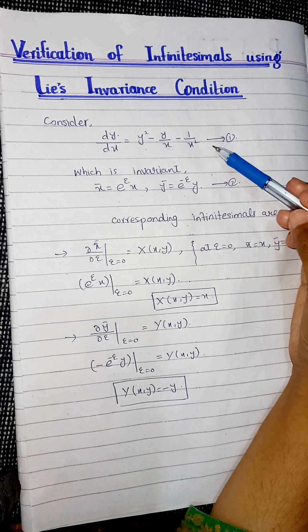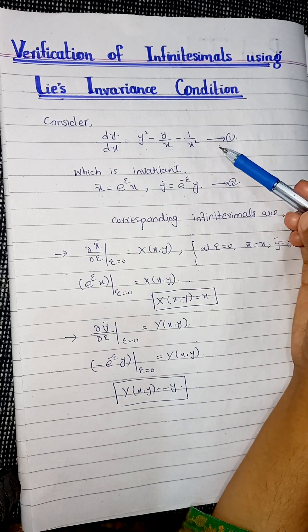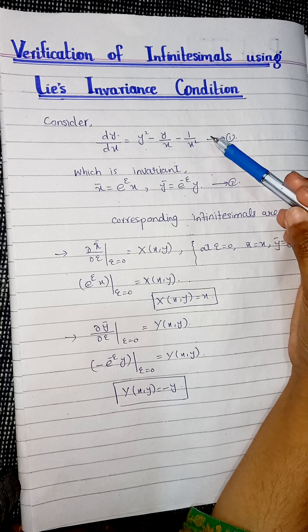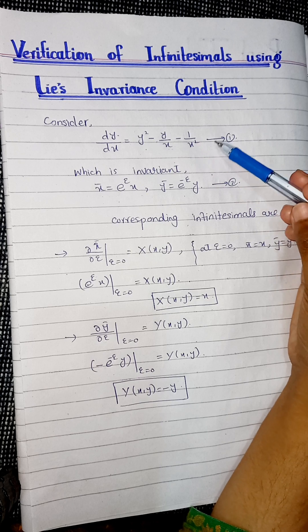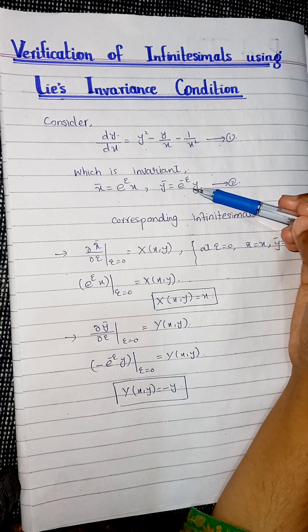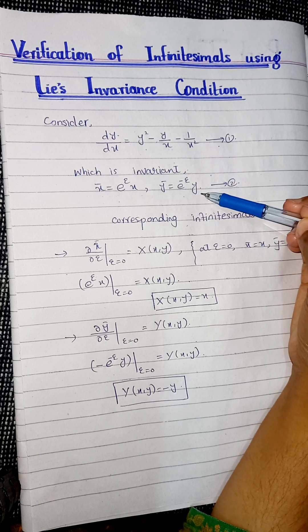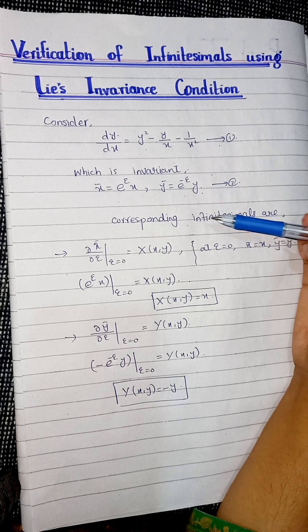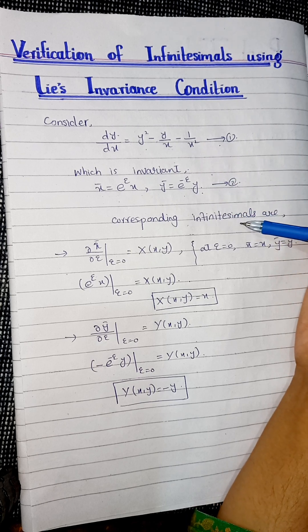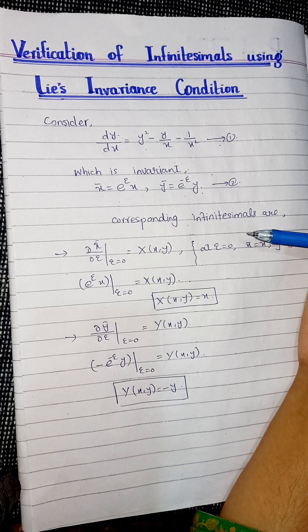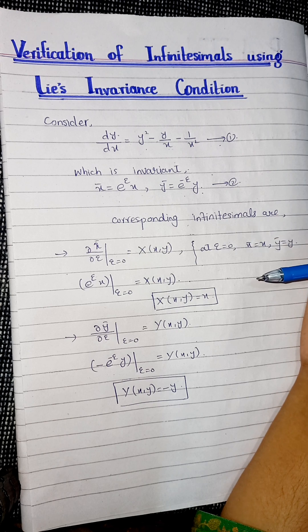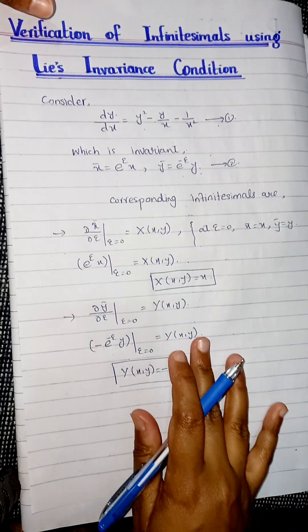We are given an ordinary differential equation — equation number one — and this ODE is invariant under this Lie group. Now, the question is: why are we finding the infinitesimals?